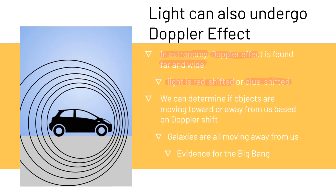We can use this fact to determine if objects are moving toward us or if objects are moving away from us based on the Doppler shift. Astronomers use this to determine that galaxies are all moving away from us. Every galaxy that we see in the universe is moving away from us.